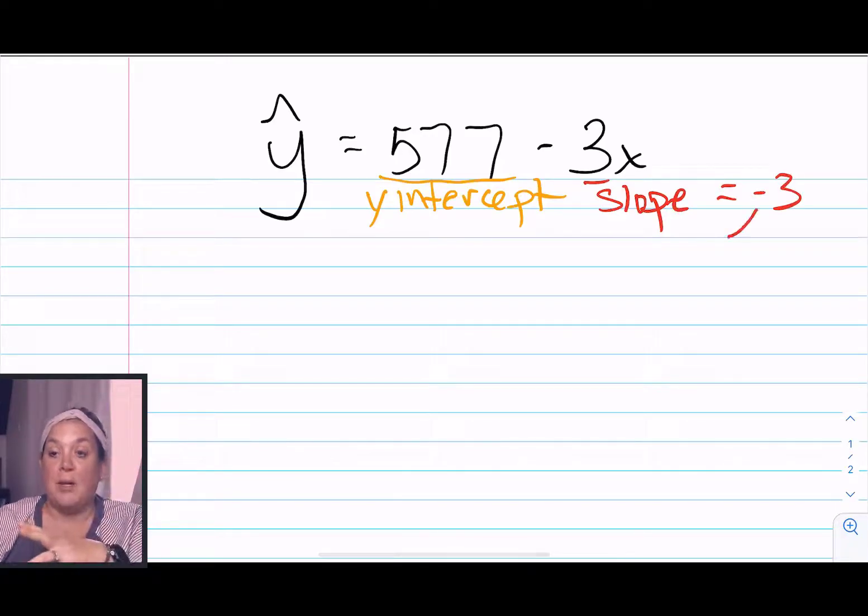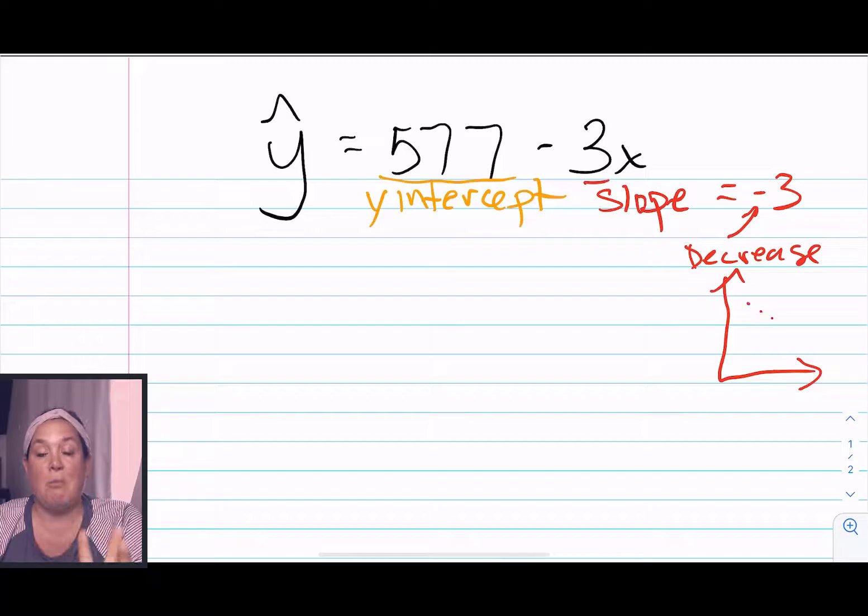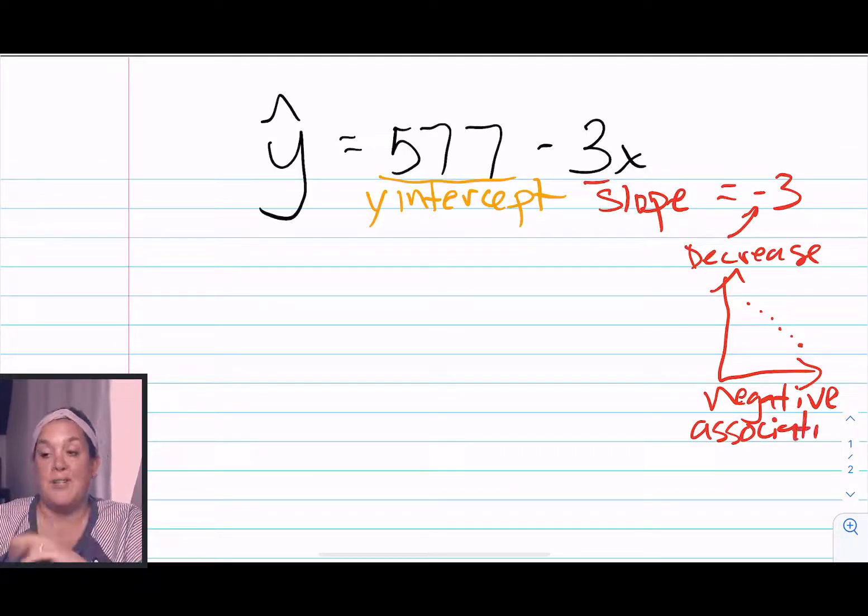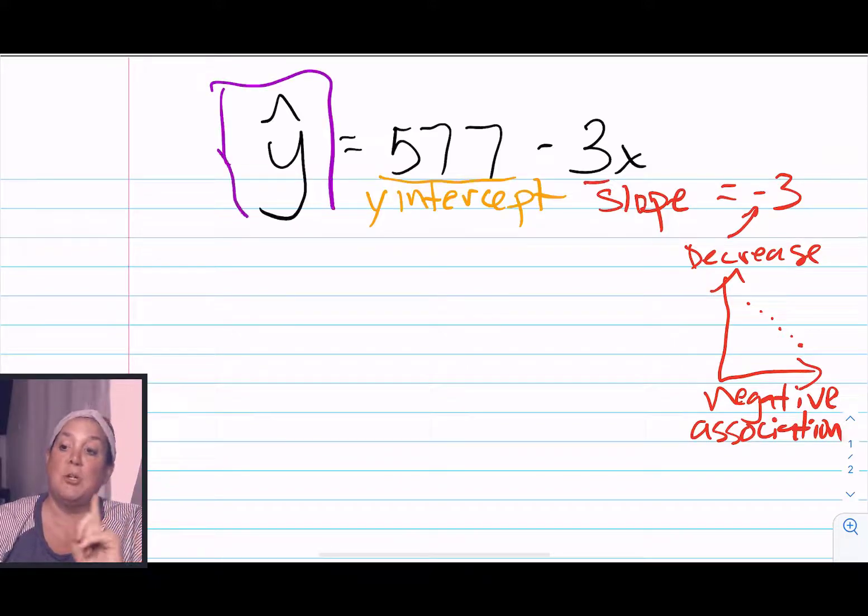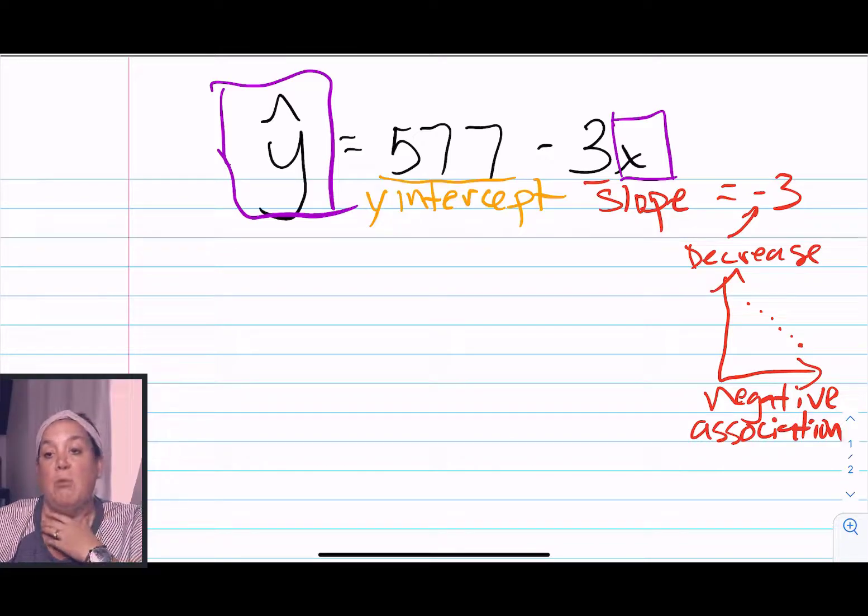Now having a slope that's negative three doesn't discuss the strength of the relationship. We looked at before that correlation coefficient, that the number actually affects the strength. Here though, it just is telling you how much change you expect to see in y for a one unit increase in x. So when it's negative, it just means that the relationship between x and y is a negative association, and we saw that already with the scatterplot.